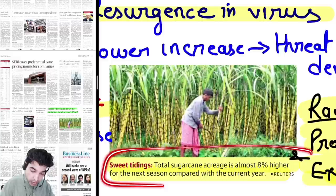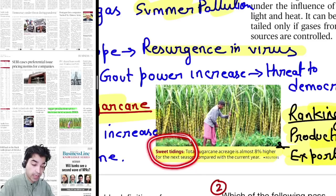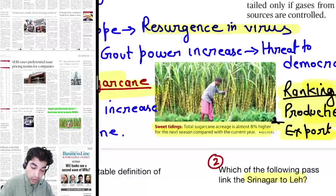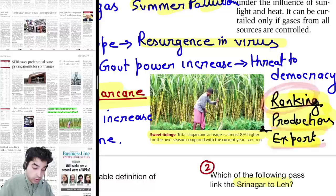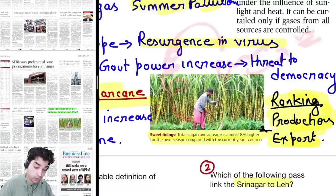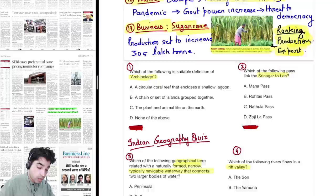Business news: sugarcane. Total sugarcane acreage is 8% higher in the next season compared to the current season. These are sweet tidings — sugarcane production this year has been quite high at 305 lakh tons, which is a good thing. Tell us India's ranking in sugarcane production and in export — these are different things. Sometimes production is high but we consume it domestically so exports are relatively lower. Also tell Brazil's rank in production and export.